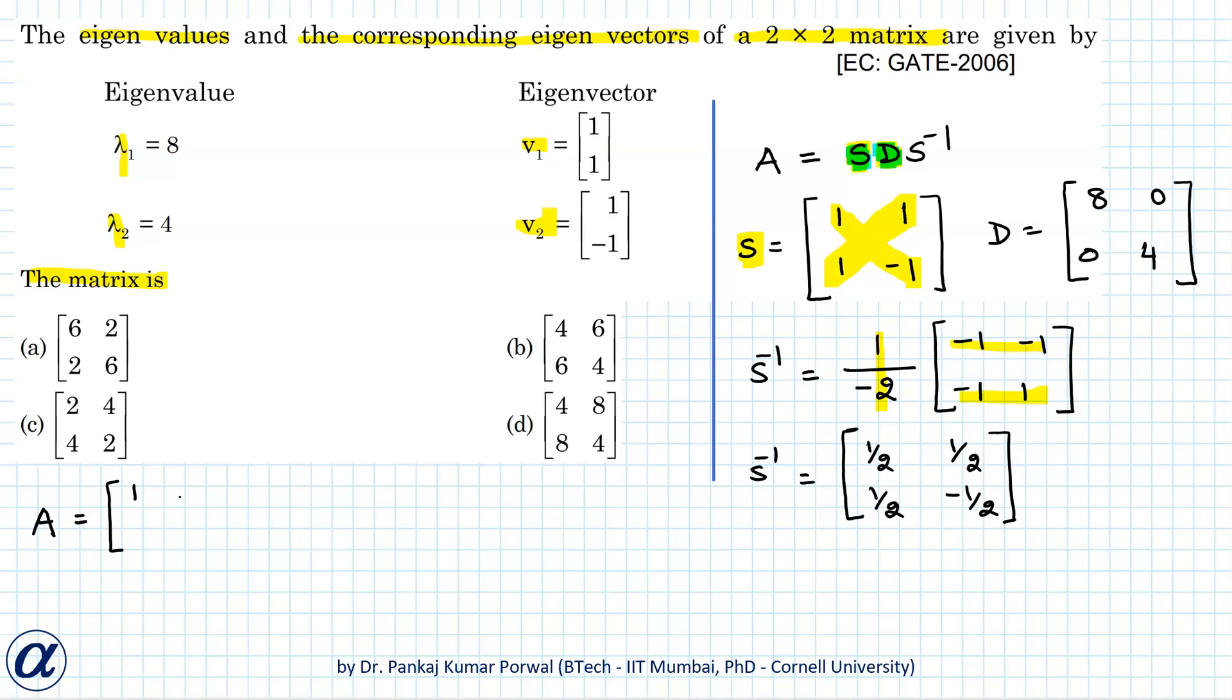So matrix A can be written as S D S inverse. So S is 1, 1, 1, minus 1. D is 8, 0, 0, 4 and S inverse is 1 by 2, 1 by 2, 1 by 2 and minus 1 by 2. And let's multiply this one and this one first.